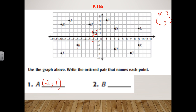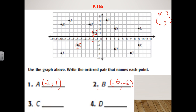Now let's find point B — there it is. We write two numbers for the point, starting with x. For point B, x is negative six, and y is negative two. For point C, x is seven and y is negative four.